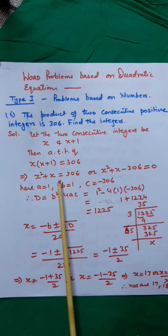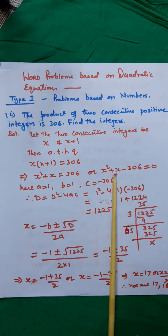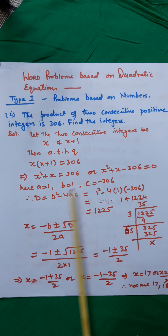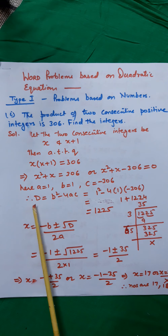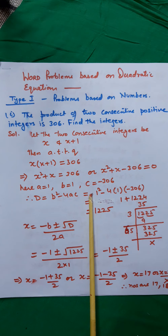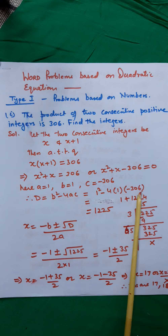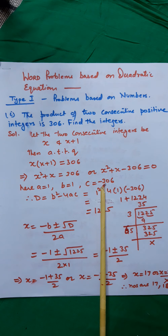x² + x = 306, or x² + x − 306 = 0. Here a = 1, b = 1, and c = −306. Therefore D = b² − 4ac = 1² − 4(1)(−306). Please take care that when you take the value of c, the negative sign has to be taken along with it.